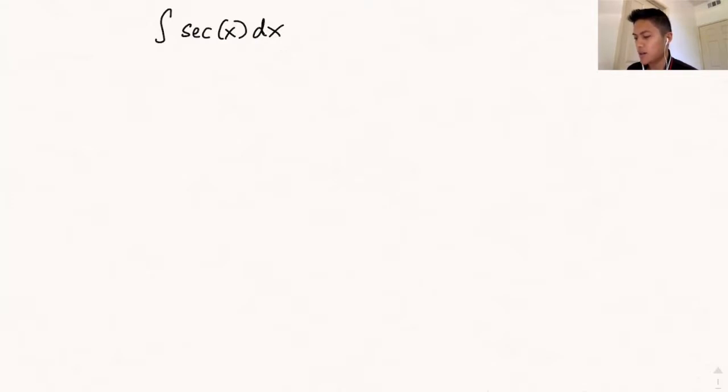There's actually a couple of ways that you can integrate this function. I will show you the one that I remember. But for now, what we're going to do is multiply secant of x by a clever form of 1.